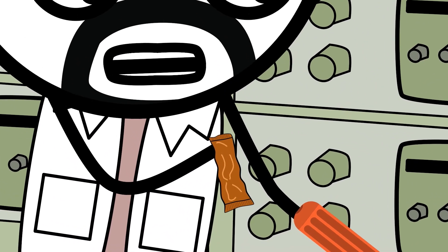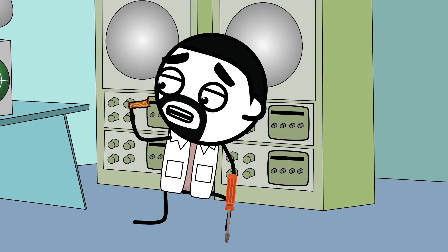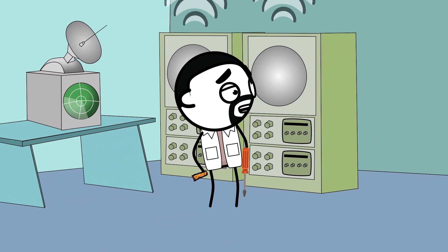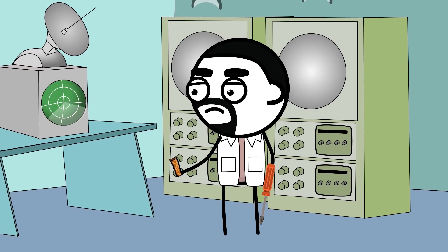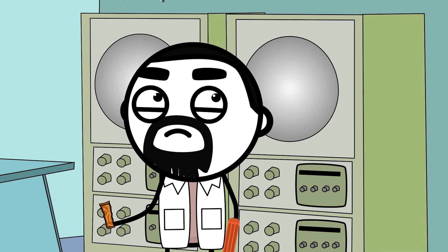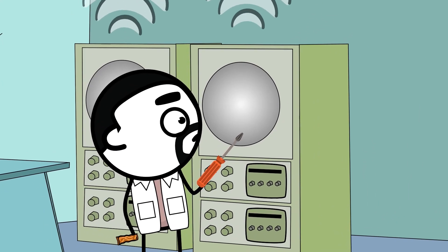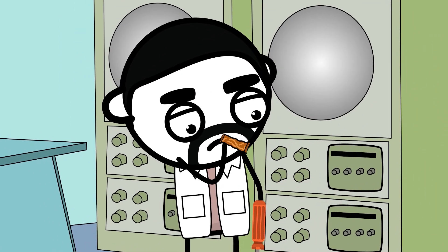But what he pulled out wasn't a solid candy bar. It was a gooey, sticky, melted mess. He stared at his chocolate-covered fingers, then at the magnetron, then back at his fingers. The room wasn't hot. He hadn't been sitting on it. There was only one possible culprit. The humming tube in front of him, the invisible radar waves, had cooked his candy bar.